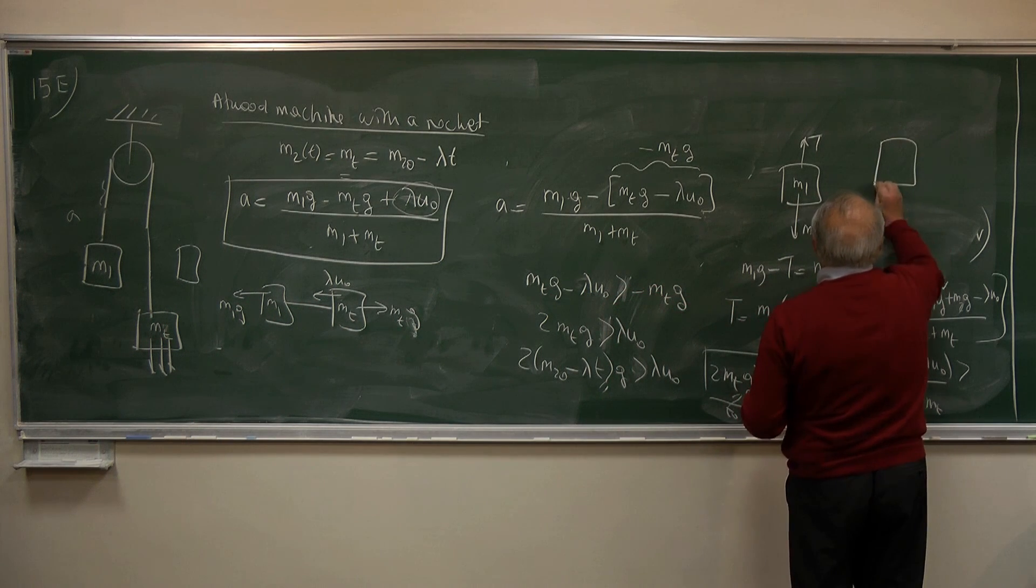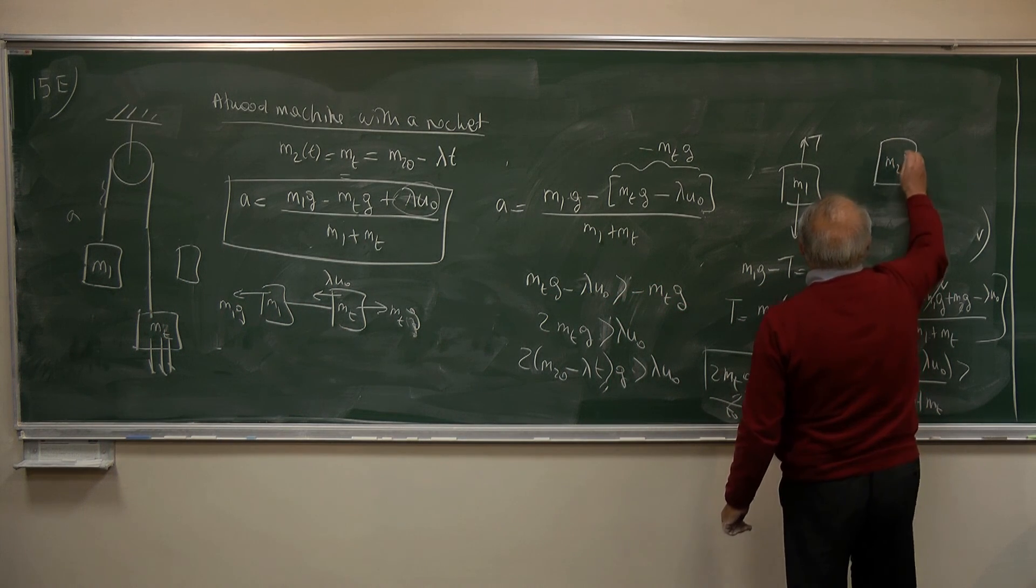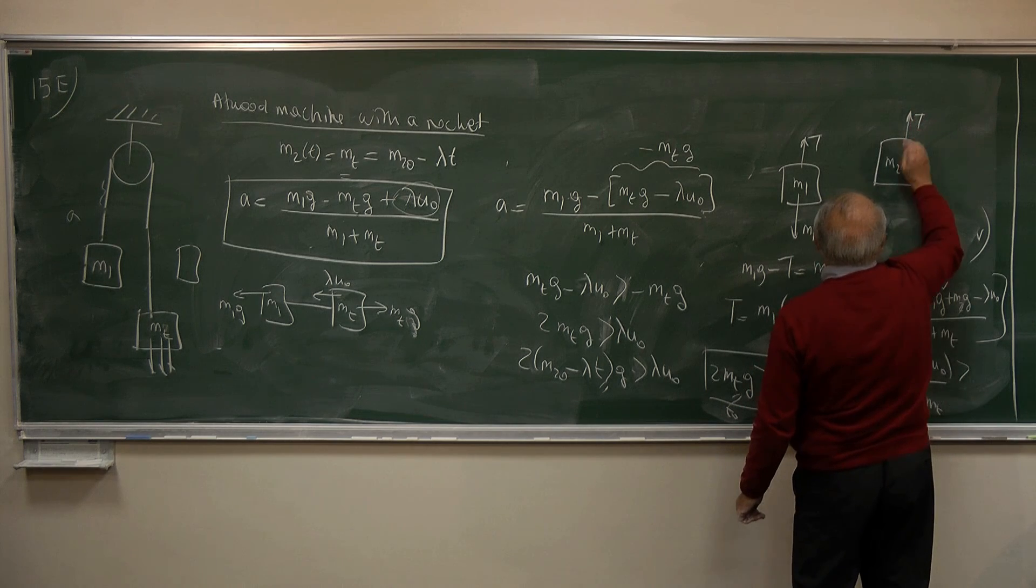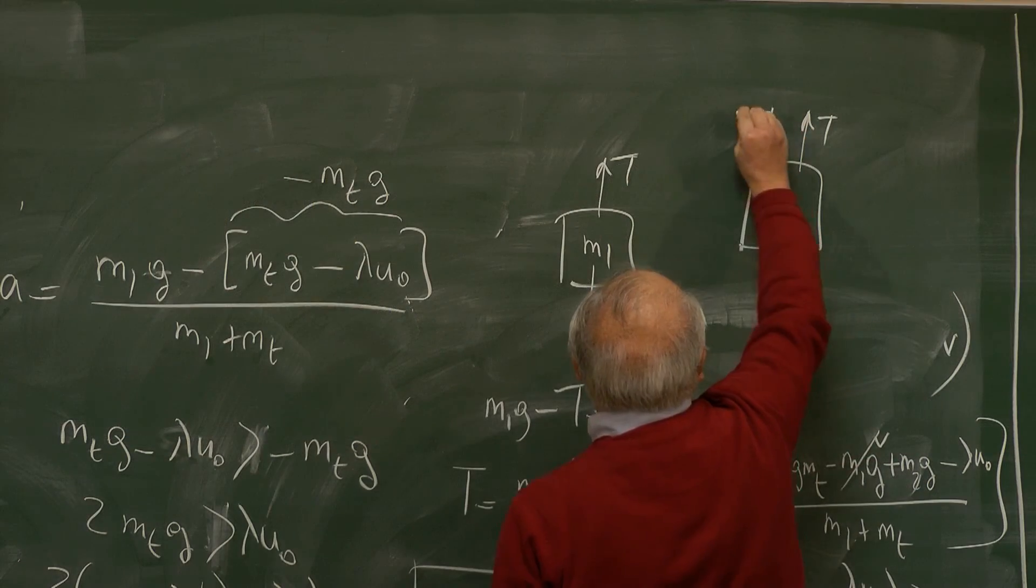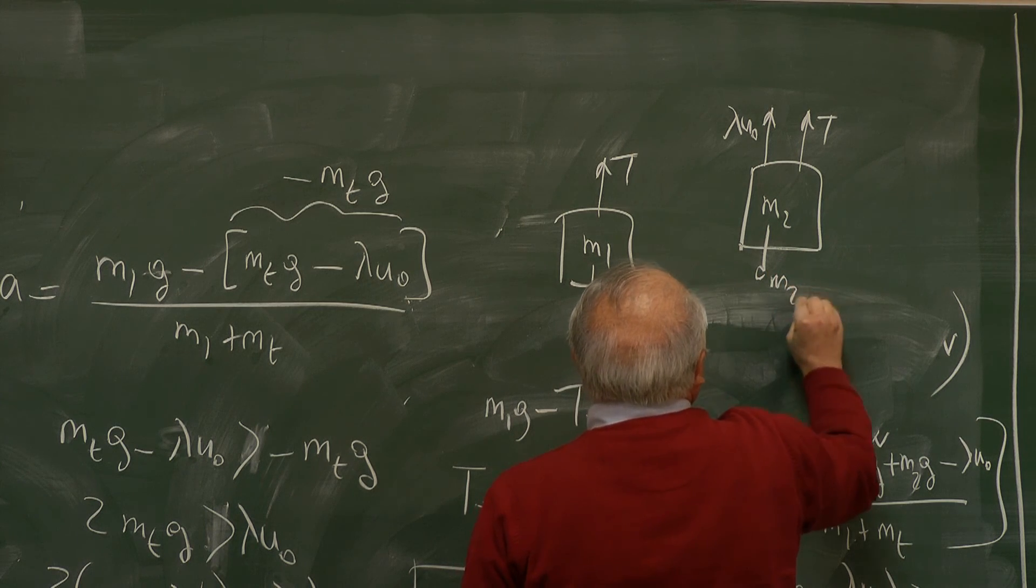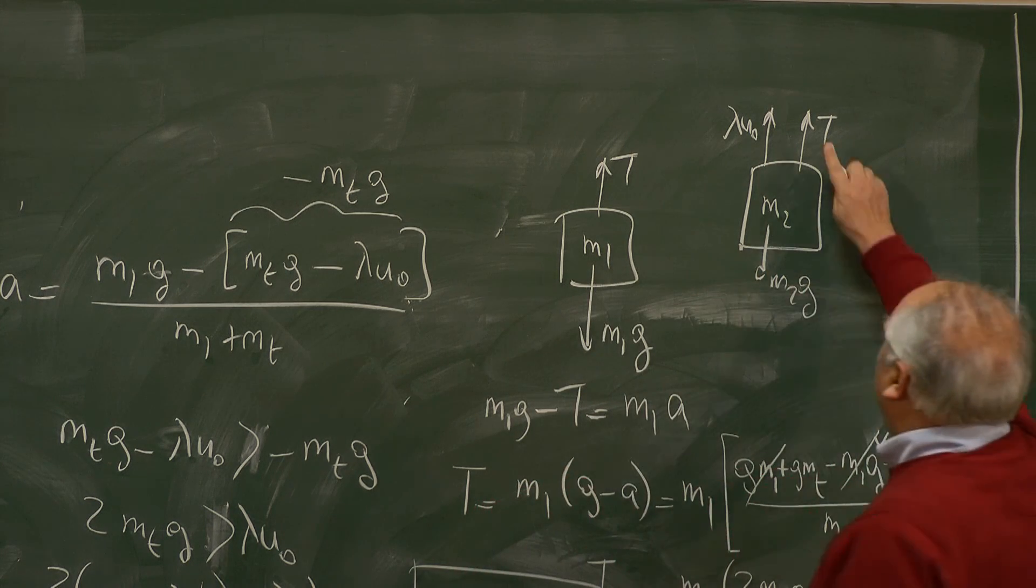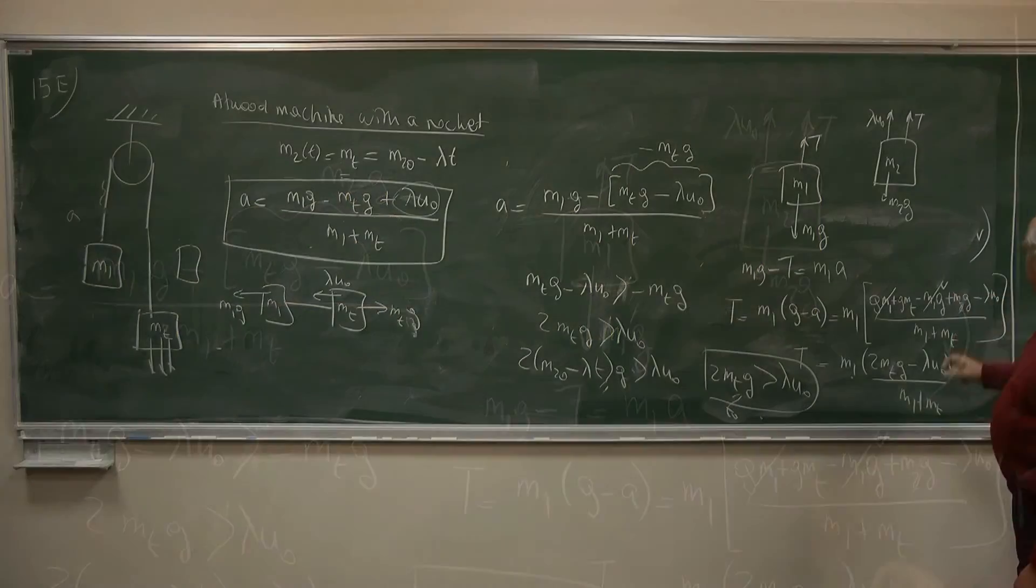Likewise, if you want to solve for the second mass, you isolate, you have a tension, and then you have this thrust, M2 G. So you can show that tension is the same thing here.